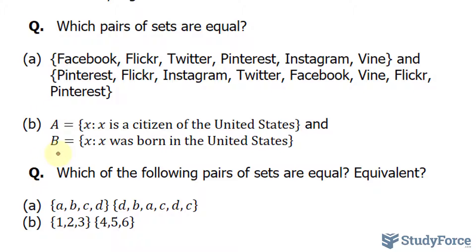In question B, we have two sets, A and B. This one consists of all X values, where we have citizens of the United States. And in B, X values are those that were born in the United States.